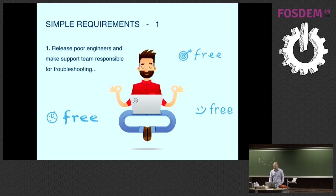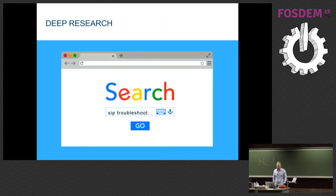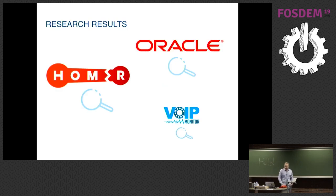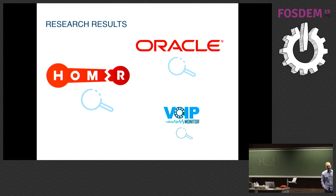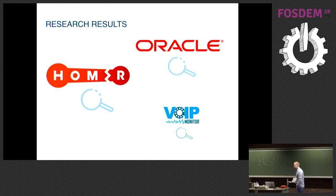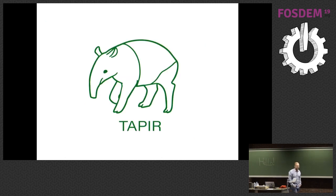We did deep, deep research — by which I mean we looked further than the first page of Google. We found Oracle Paladin, Homer, and VoIP Monitor — three solutions. Unfortunately we didn't have much budget to deploy any of them. We took Homer 5, but 20,000 messages per second was something it couldn't handle in the open source version, because it was MySQL-based. That's why the only thing we could do was create a monster. We created Tapir.